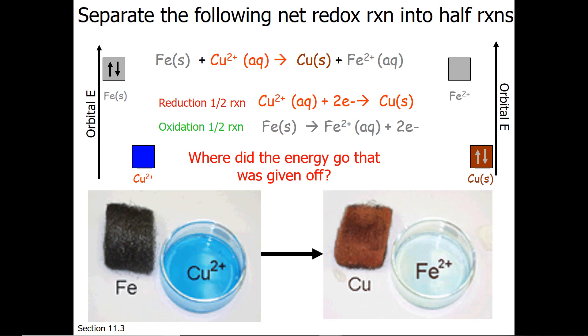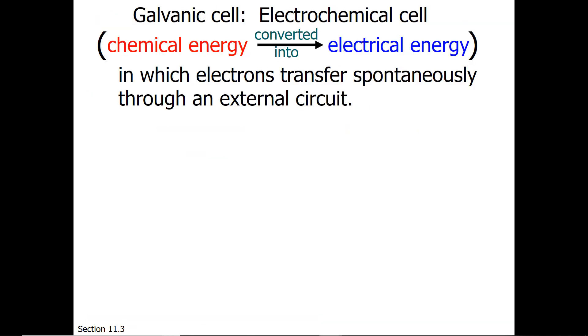But what if we could capture the energy in some way? These are known as electrochemical cells. In particular, we're going to work with galvanic cells, which are when chemical energy is converted into electrical energy.